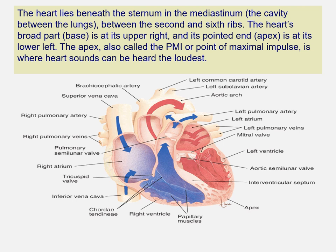Controlled by the autonomic nervous system, the heart pumps blood to all the organs and tissues throughout the body. It's transported through vessels known as arteries and veins, which carry the blood throughout the body and keep the heart filled with blood to maintain blood pressure. The heart spans the area from the second to the fifth intercostal space. It lies beneath the sternum in the mediastinum between the lungs. The heart's broad part or base is at its upper right, and its pointed end or apex is at its lower left. The apex is also called the point of maximal impulse and is where heart sounds can be heard the loudest. The exact location of the heart can vary slightly with each patient.